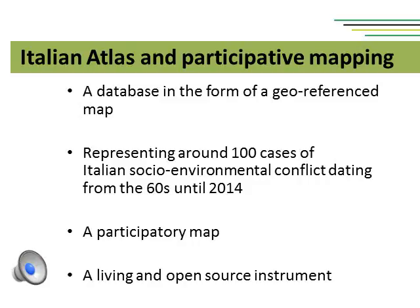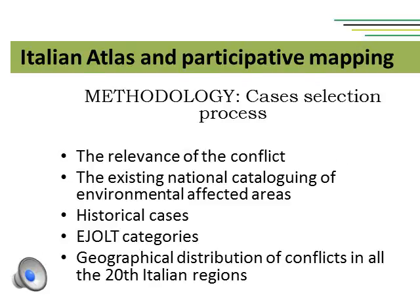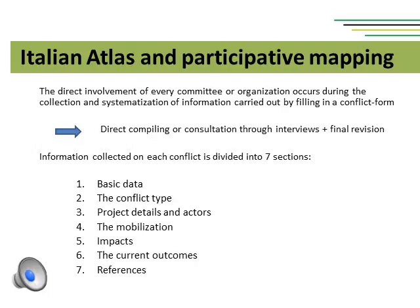The Italian Atlas is a database in the form of a georeferenced map representing around 100 cases of environmental conflicts, from Bayon to the Land of Fires, dating from the 1960s until 2016. It is an example of a participatory map — a living and open-source instrument for citizens to produce and share information on ongoing environmental conflicts. The case selection process involves a range of issues: the evaluation concerning relevance of the conflict, the existing national cataloguing of environmentally affected areas, historical cases, the use of EJAtlas categories, and the geographical distribution of conflicts across all 20 Italian regions. Once information about each conflict is collected, it is divided into seven sections.